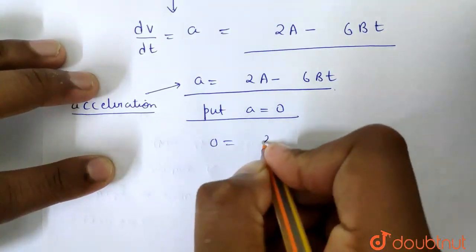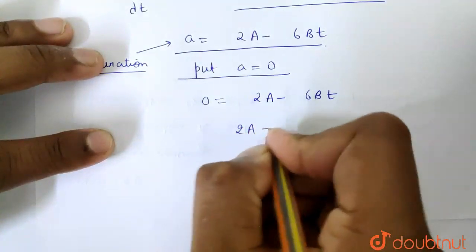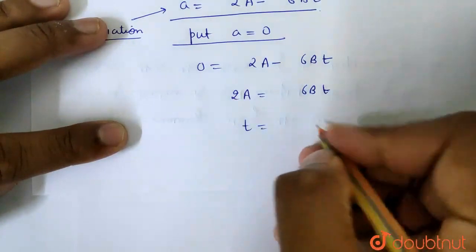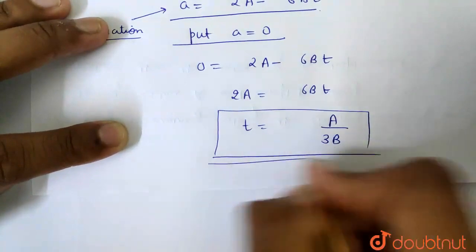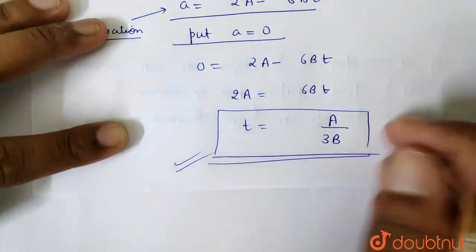How much is it? 0 is equal to 2A minus 6Bt. 2A is equal to 6Bt. Time value is A by 3B. At this time, my acceleration is 0. At this time, my time value is A by 3B. A and B are constants.